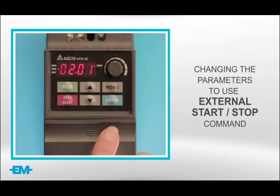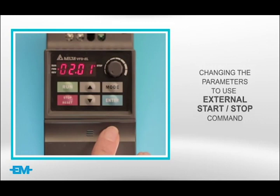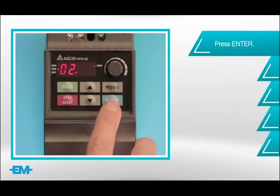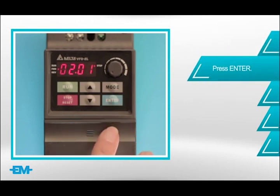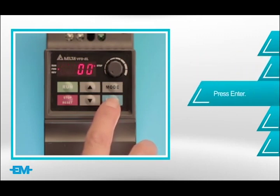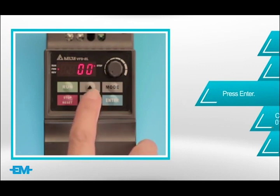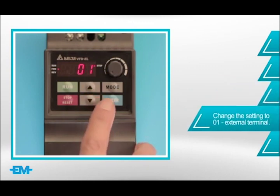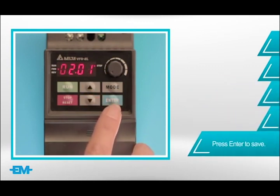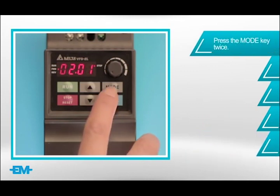Now we are going to change the parameters to use external command operation. Press enter and the display will show 02.00. Press enter and the display will show 02.01. Press enter and the display will show 0.00. Change this setting to 1, which is external terminal. Press enter to save. Press mode twice to go to operation screen.